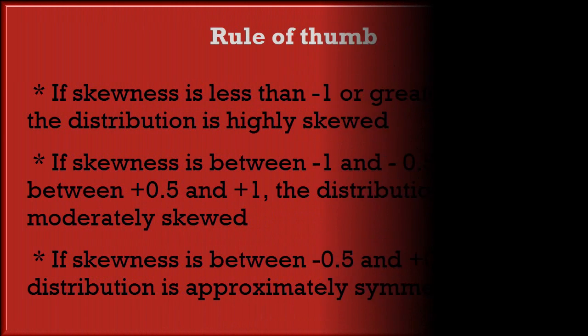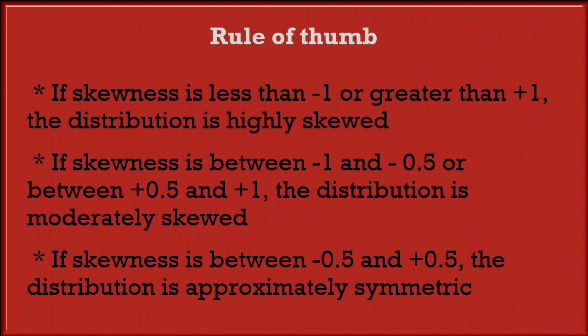Rule of thumb about skewness: If skewness is less than minus 1 or greater than plus 1, the distribution is highly skewed. If skewness is between minus 1 and minus 0.5, or between plus 0.5 and plus 1, the distribution is moderately skewed. If skewness is between minus 0.5 and plus 0.5, the distribution is approximately symmetric.